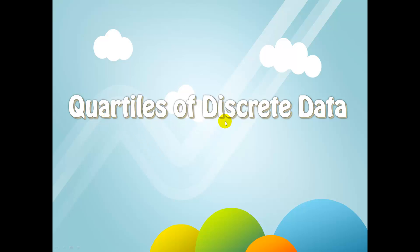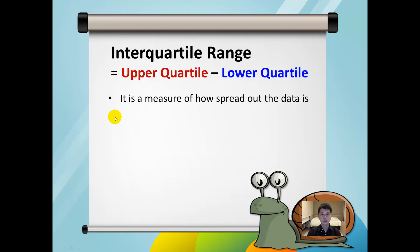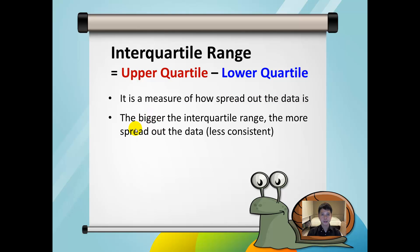We shall learn how to find the quartiles of discrete data. First, let us learn a new term: interquartile range. It is defined by the upper quartile minus the lower quartile. Interquartile range is a measure of how spread out data is. If the interquartile range is big, it means that the data is very spread out, and hence it is less consistent.